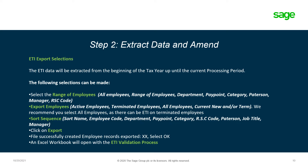The ETI data will be extracted from the beginning of the tax year up until the current processing period. The following selections can be made: select your range of employees — you can select all employees, a specific range of employees, a department, a pay point, a category, a Paterson manager, or an RSC code. You can also select which employees to export: active employees, terminated employees, all employees, or current, new and terminated employees.